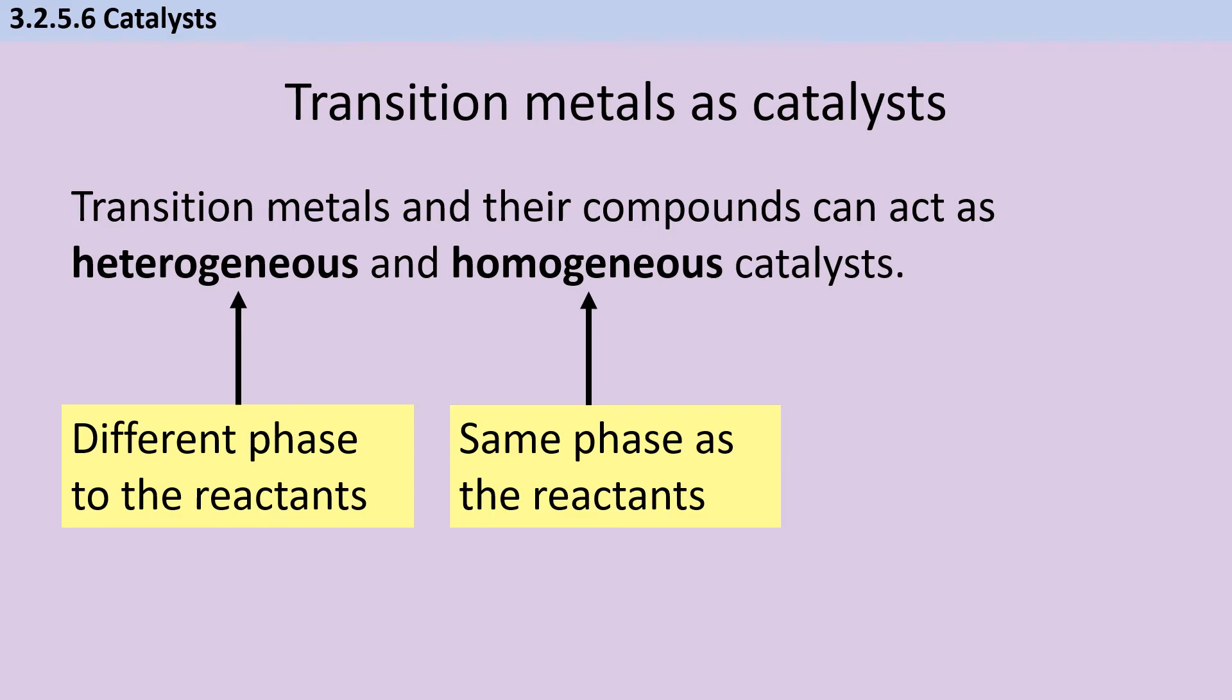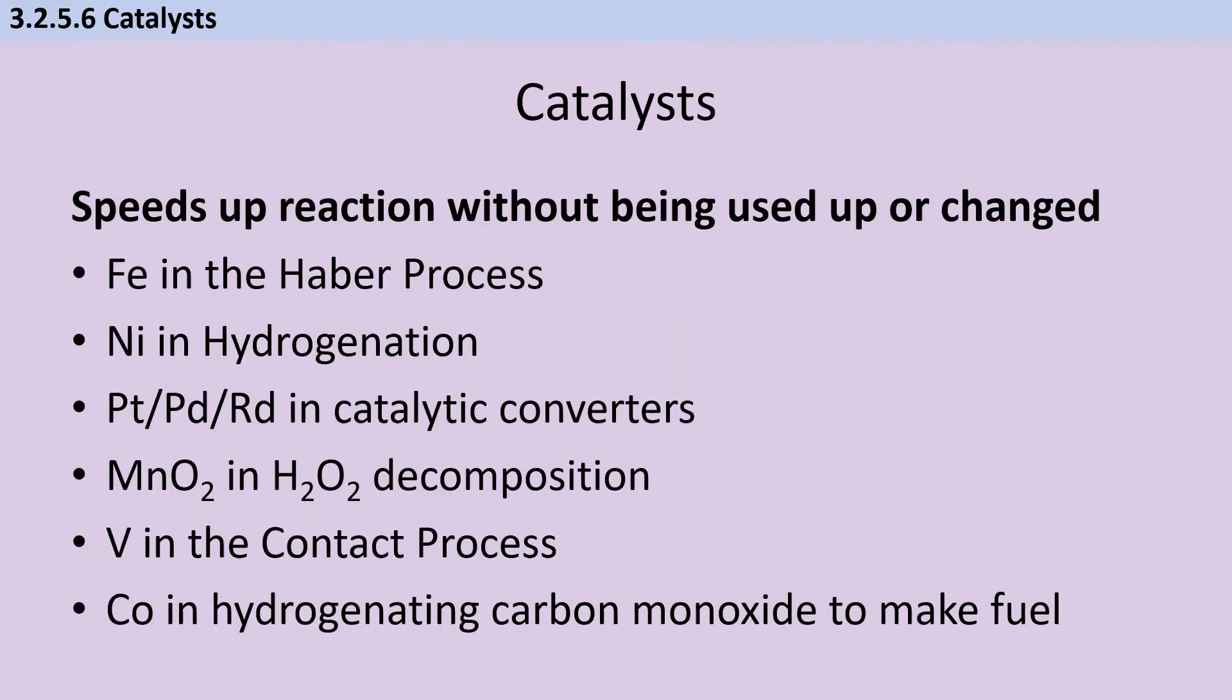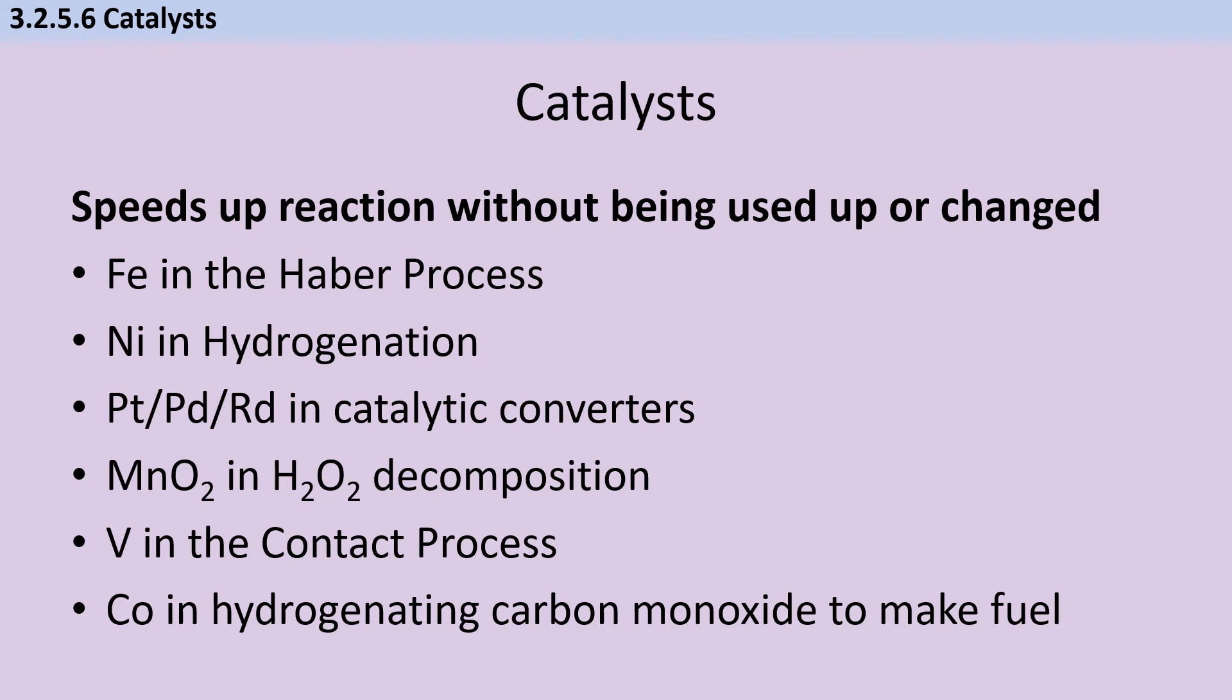Transition metals and their compounds can act as catalysts both when they're in different phases to the reactants and when they're in the same phase. Catalysts are chemicals that speed up the rate of a reaction without being used up or permanently changed. They do this by providing an alternative pathway with a lower activation energy. Not every transition metal is an appropriate catalyst for every reaction. How effective a catalyst is depends on how strongly it makes temporary weak bonds while changing oxidation state. While changing oxidation state, transition metals easily gain and lose their 4s and 3d electrons, allowing them to make weak bonds.